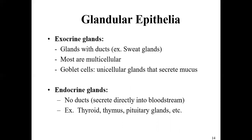In contrast to exocrine glands, endocrine glands have no duct or passageway. Instead, they diffuse their secretions directly into the bloodstream. Examples of endocrine glands include the thyroid gland, thymus gland, pituitary gland, adrenal glands, and the pancreas — which has both exocrine and endocrine functions. The endocrine system will be covered as one of the first chapters in the next course.